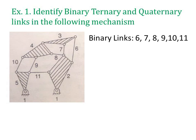Binary links are link numbers 6, 7, 8, 9, 10, and 11. For example, link number 6 is connected to link number 2 and link number 3 — connected to two other links, so it is called a binary link. Similarly links 7, 8, 9, 10, and 11 are all connected to two other links and are therefore binary links.